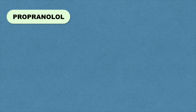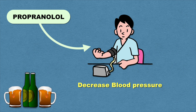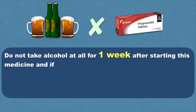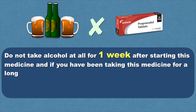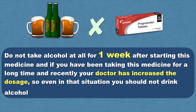The next medicine is propranolol, used in the treatment of blood pressure and sometimes for migraine. This drug helps in reducing blood pressure, and alcohol also reduces blood pressure in our body. So if both are taken together, there is a chance of a sudden drop in blood pressure. Therefore these two should not be taken together. Do not drink alcohol for at least one week after starting this medicine, and even if your doctor has recently increased the dosage, you should not drink alcohol for one week.